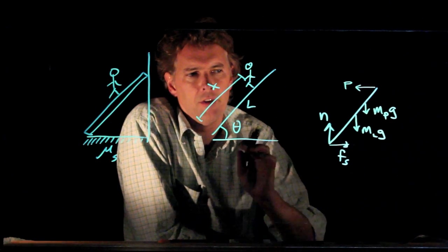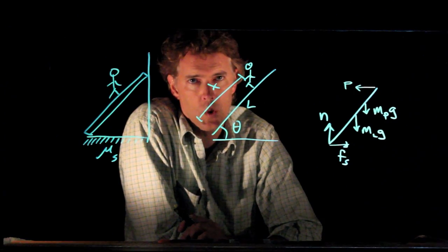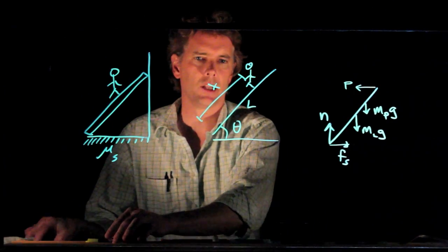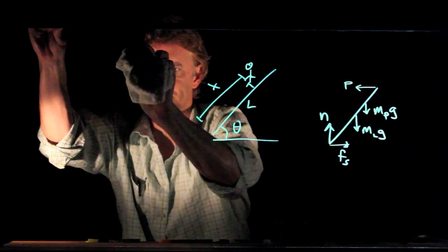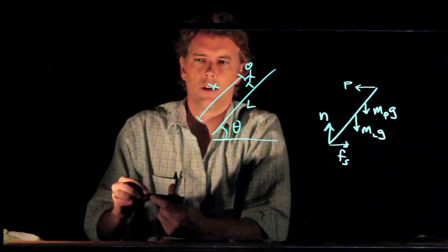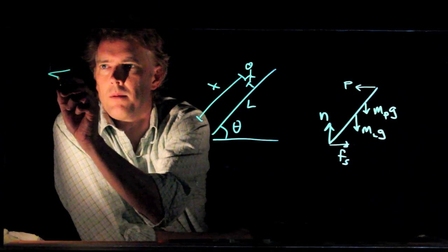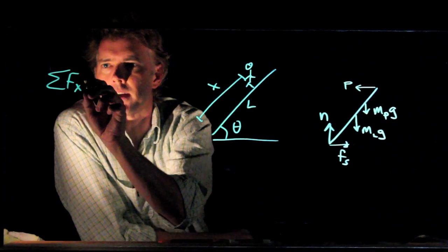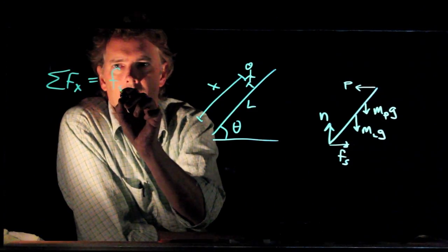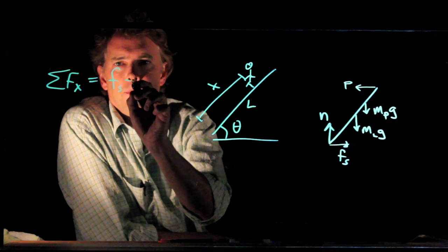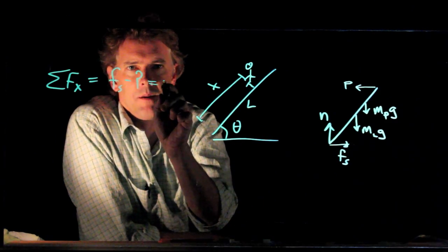And now let's think about the forces that are acting on the ladder and also the torques that are acting on the ladder. We'll make some room over here. Okay, so we have sum of the forces in the x direction. What are the forces in the x direction? Well, F sub s is going to the right. P is going to the left. That's it. Those have to add up to zero.